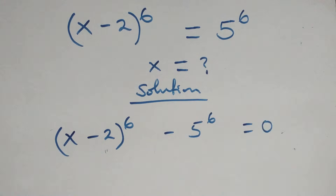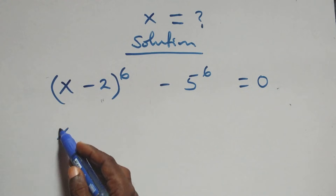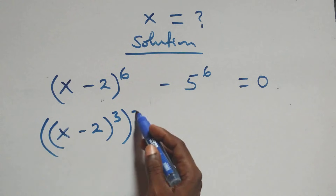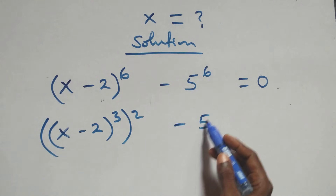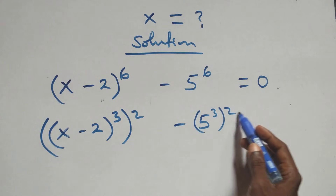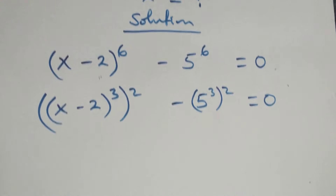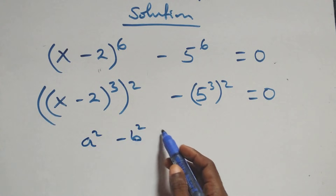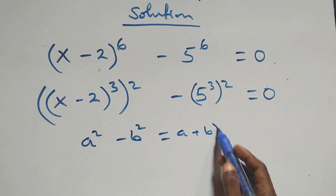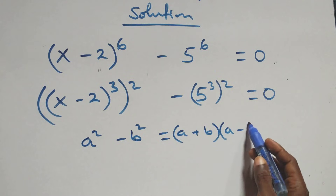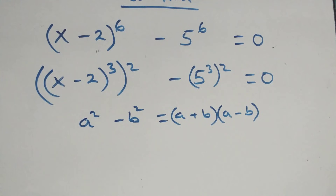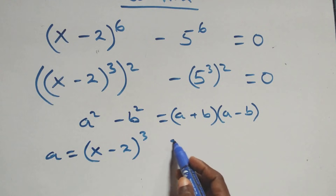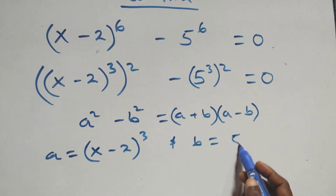This equals to 0. We can write this as (x minus 2) all raised to power 3, then all raised to power 2, minus 5 raised to power 3, all raised to power 2, equals to 0. This follows from the pattern a squared minus b squared, where a stands as (x minus 2) all raised to power 3, and b stands as 5 raised to power 3.